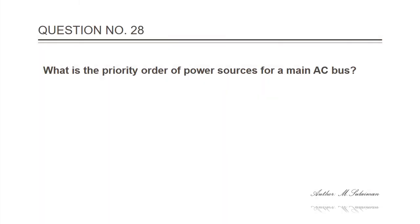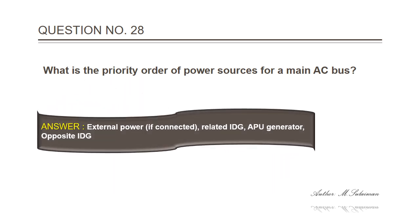Question 28: What is the priority order of power sources for a main AC bus? Answer: External power connected, related IDG, APU generator, and opposite IDG.